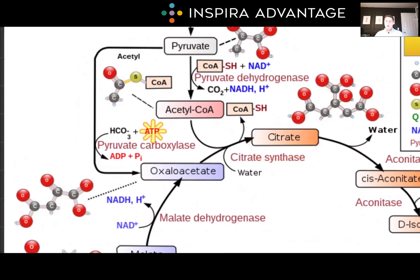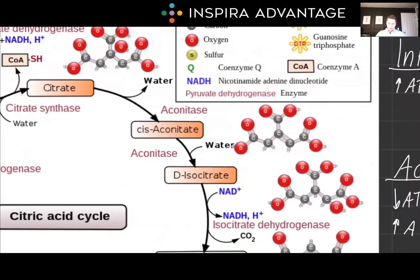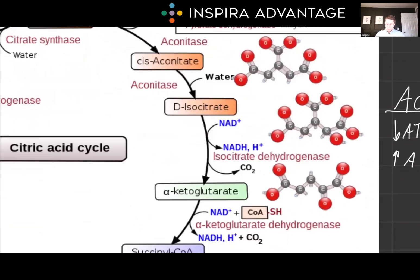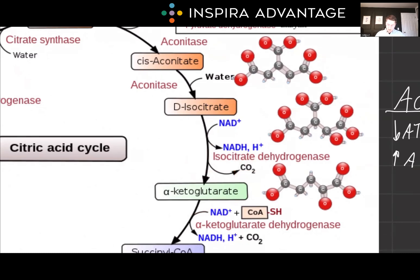After we form citrate, we isomerize it — spinning it around through a dehydration and hydration reaction. Nothing important is produced here. Next, something important happens: we make NADH. Whenever we're making NADH or ATP, this is an important step for the MCAT. We make this by going from isocitrate to alpha-ketoglutarate.